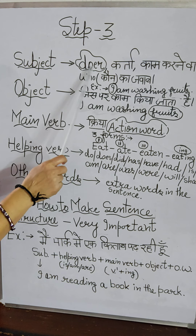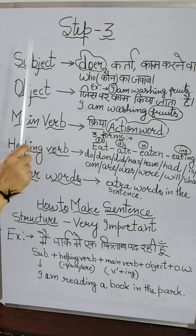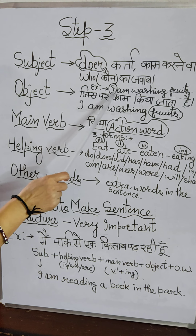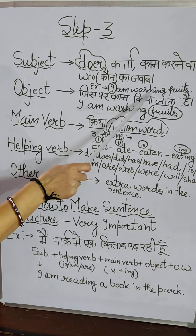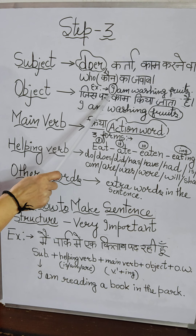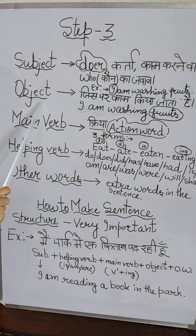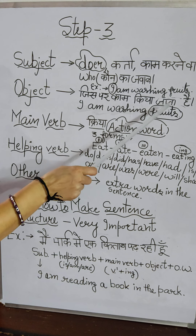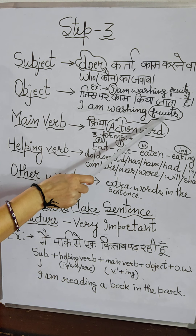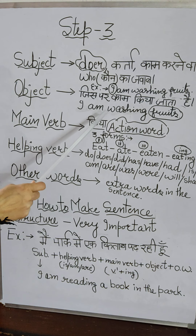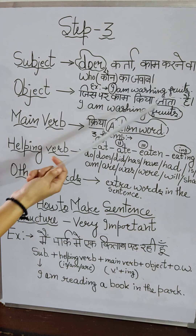Who is the doer? The doer is the person who is doing — that is 'I'. So 'I' is the subject. We can take another example: 'I am reading a book.' So what am I reading? A book — so a book is our object.